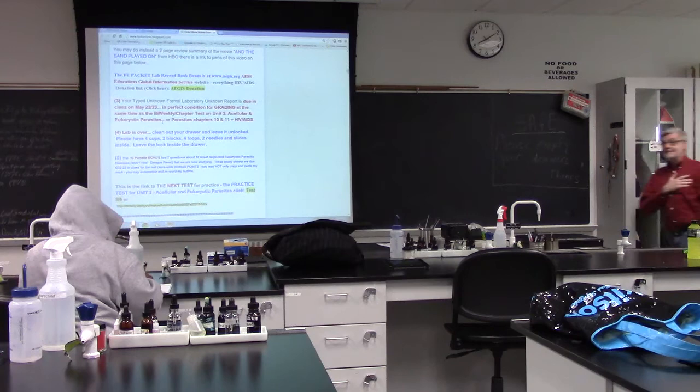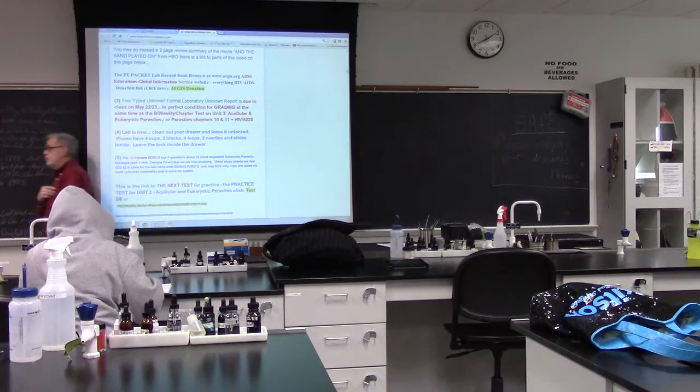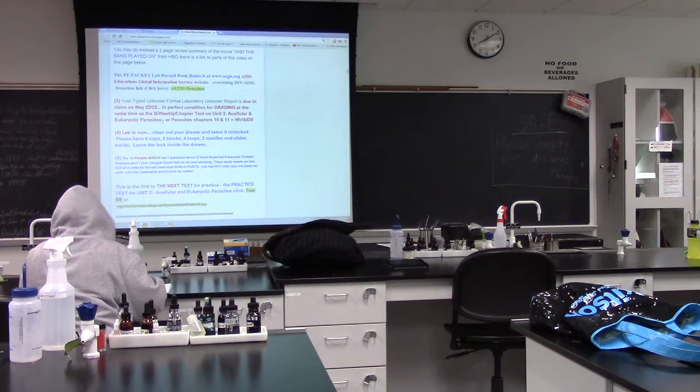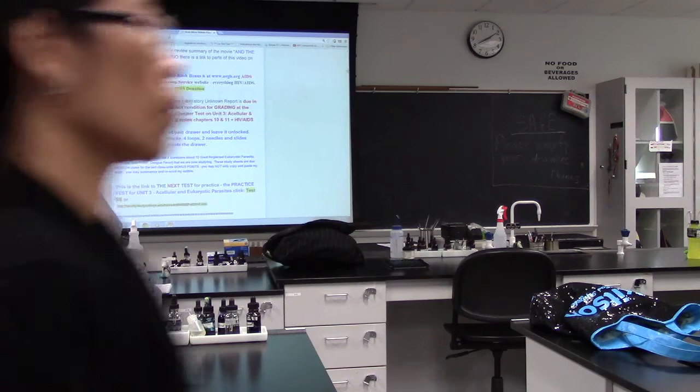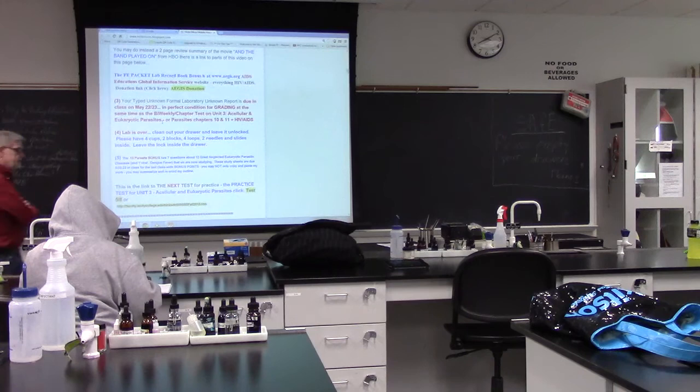In your next class, these are the things that are going to be due — that means on Wednesday. Bring a Scantron 884E, the same one you've been doing, and you're going to have 200 multiple choice questions over everything since the midterm. That is acellular and eukaryotic parasites — going from the smallest to the largest: viroids, satellites, prions, general viruses, HIV/AIDS, and the 13 eukaryotic parasites.